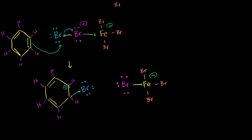It can nab a proton off of the benzene ring, just like we saw in the last video. This is now the base. This whole complex acted first as a strong electrophile, but now that one of the bromines has bonded to the benzene ring, the remaining part wants to grab a proton — it will act as our base and nab one of these protons. When it nabs the proton, the leftover electron stays on the ring and can be given back to the carbocation, restoring a nice aromatic ring.